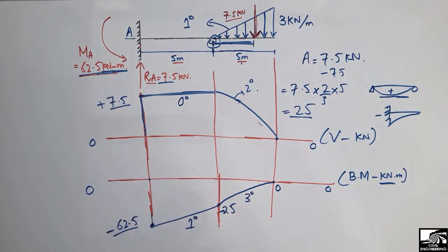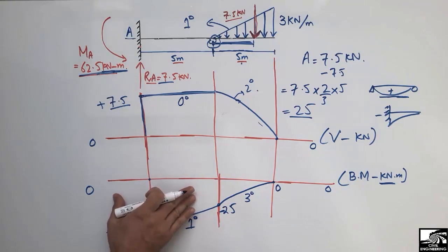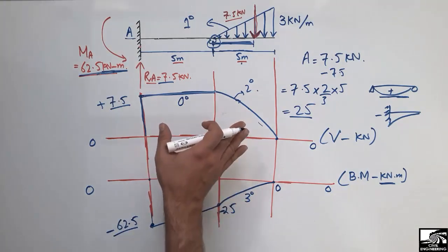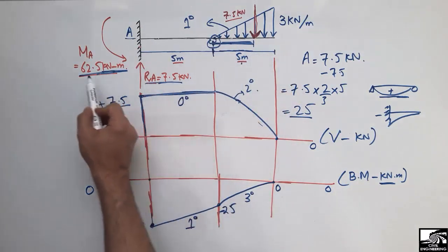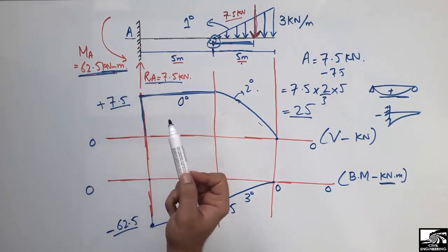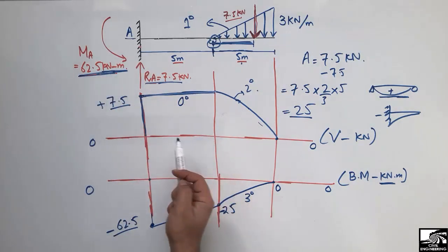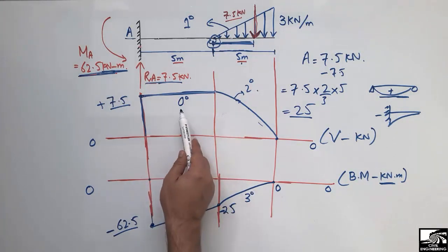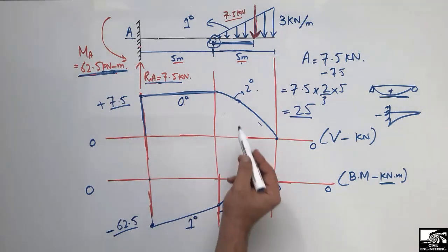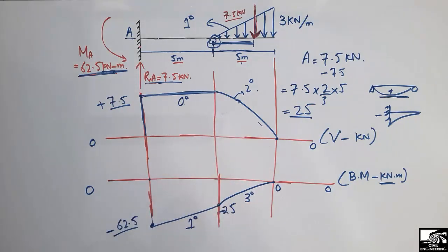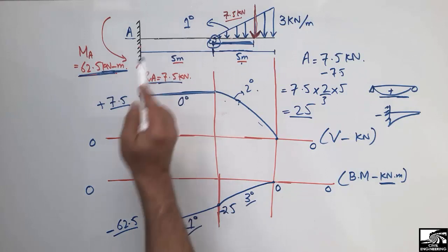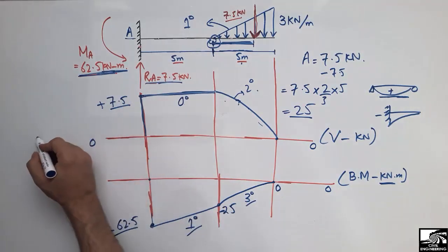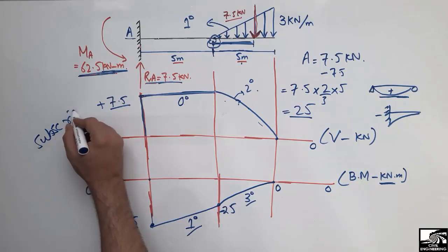To summarize: the first step is to find support reactions using equilibrium equations. Then draw the shear force diagram, and from the shear force draw the bending moment diagram by noting that the bending moment is always one degree greater than the shear force, and the shear force is always one degree greater than the load diagram. For more EC1 Engineering videos, please subscribe to our channel. Thank you for watching.